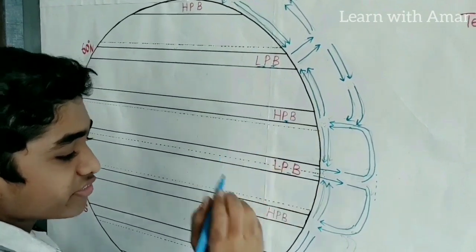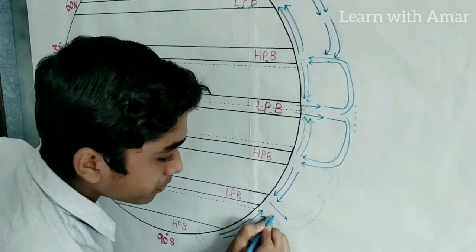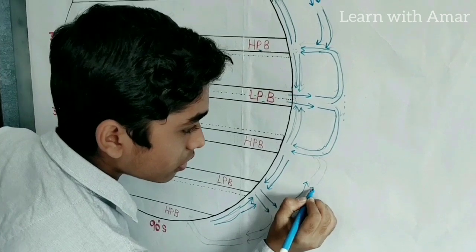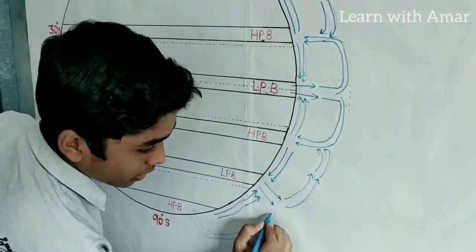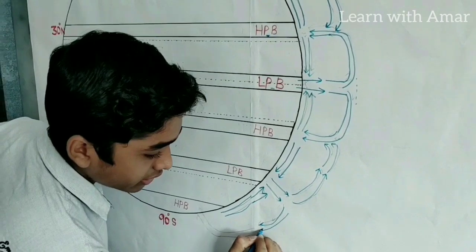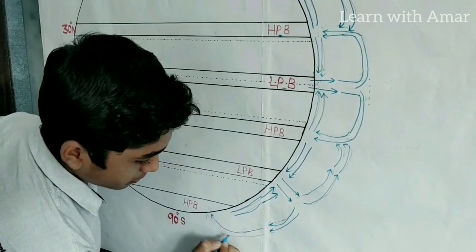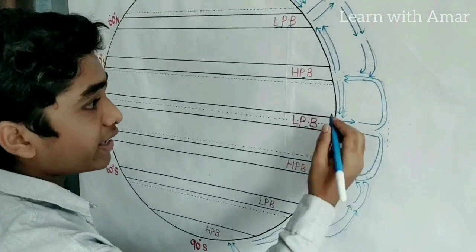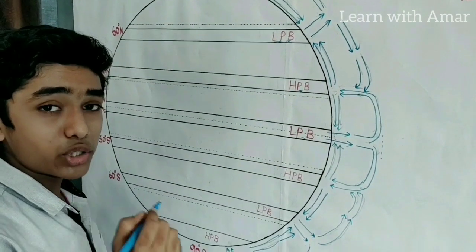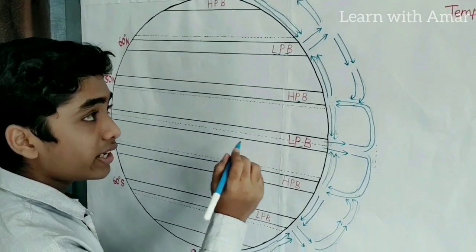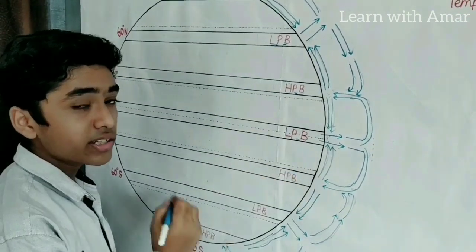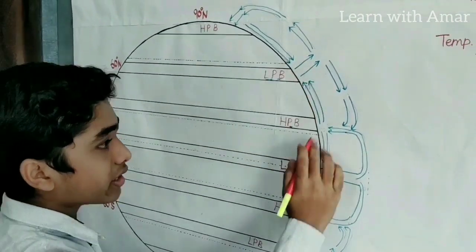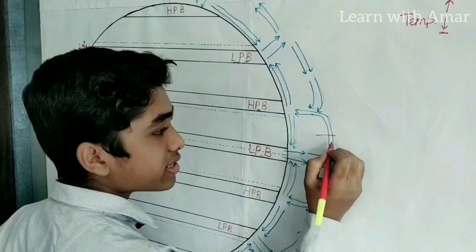The same happens in the southern hemisphere also. These cycles ensure that heat is equally distributed across the earth's atmosphere. We find three main cells — these cycles are known as cells.